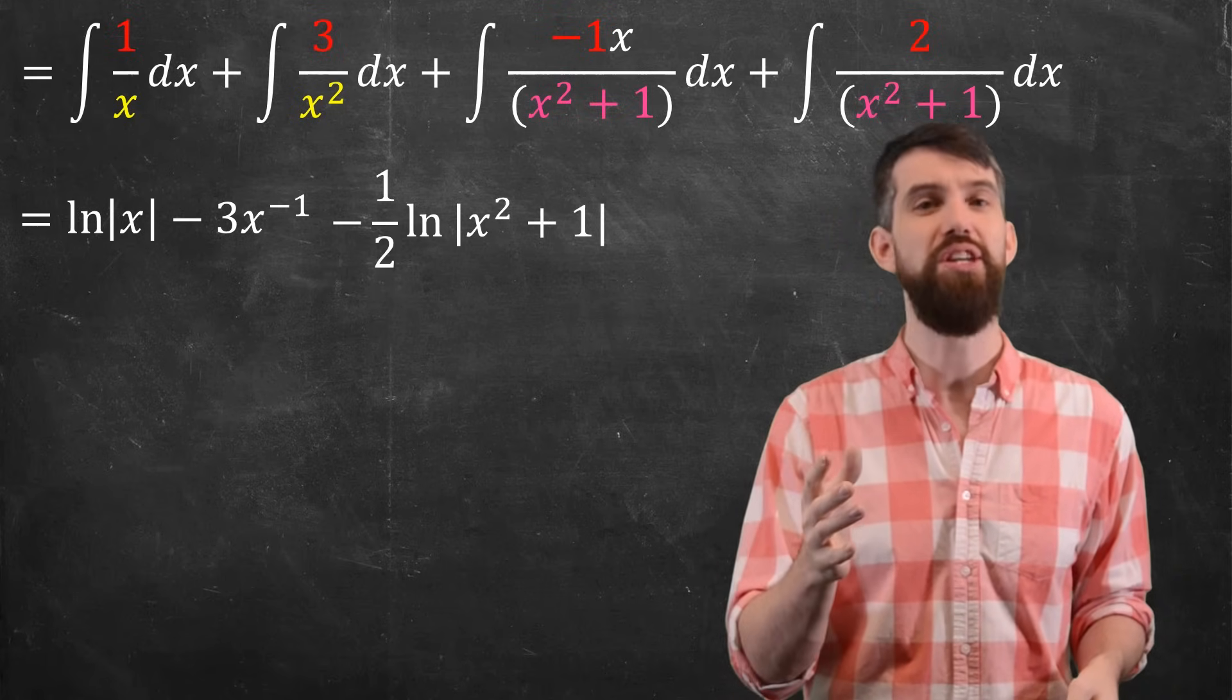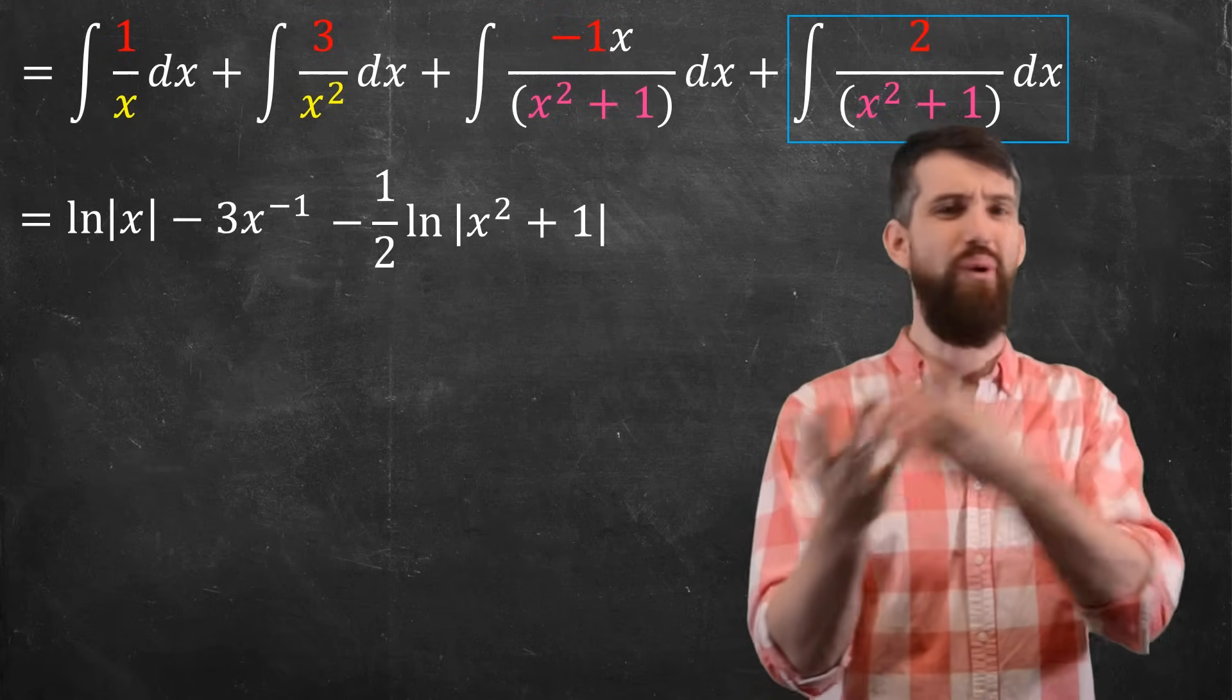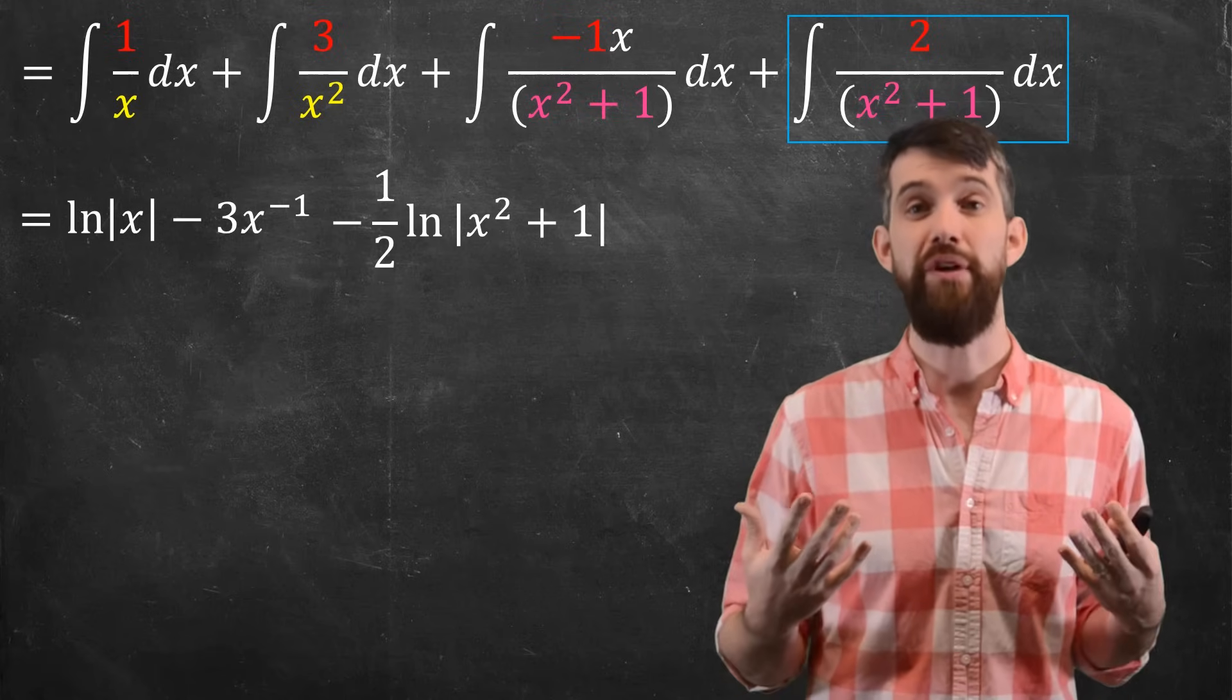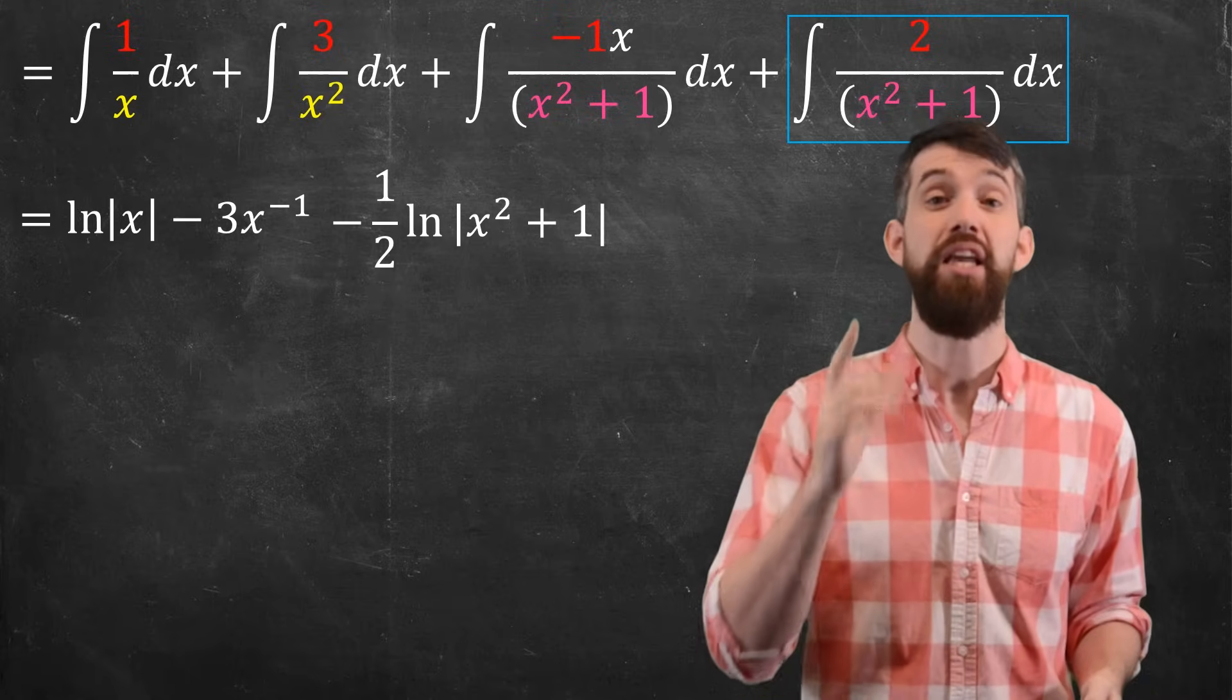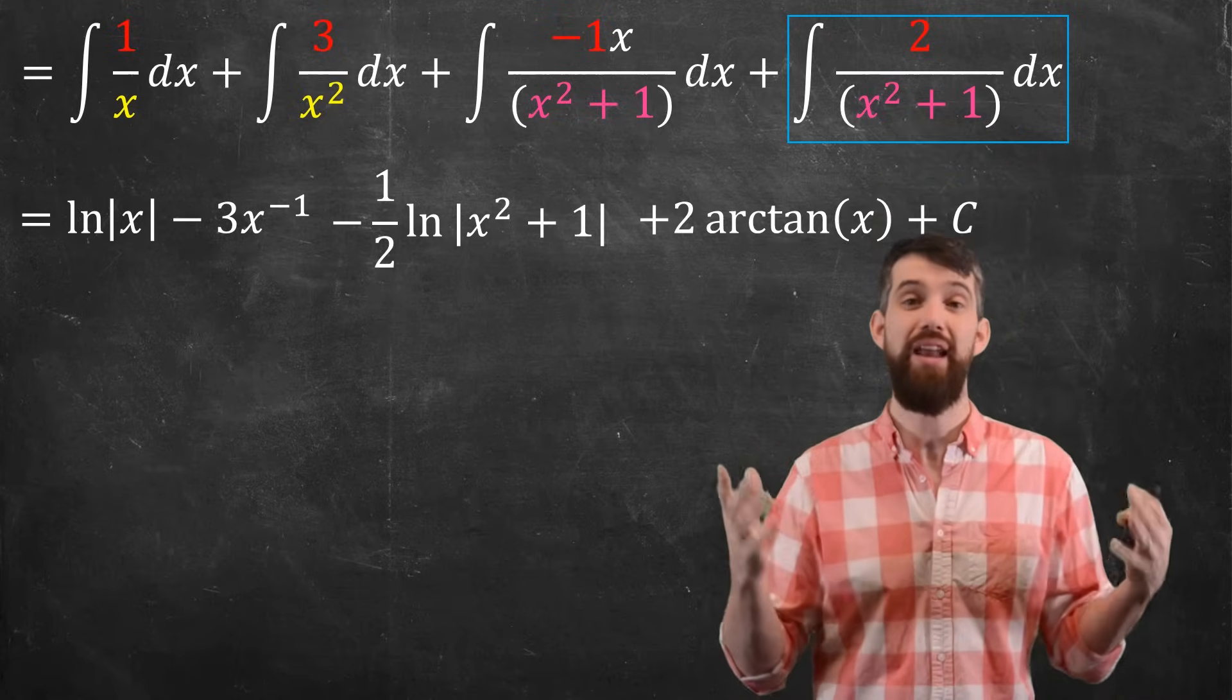Finally, I have to deal with this final fourth integral. This one is either jumps out at you or it doesn't. This is the antiderivative of arctangent, or more precisely, twice arctangent. So I put that down, I add my plus c, and I am done.